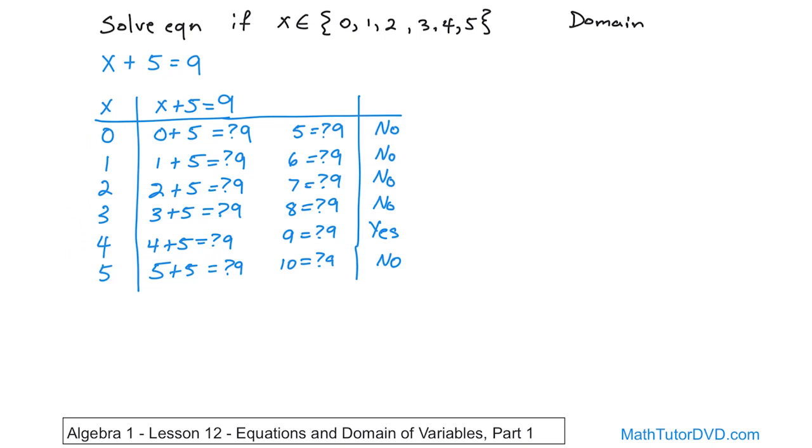So it looks like what we did is we took every possible value of x in its domain. In other words, every possible value of x that it could represent. And we calculated what would happen if we put it in there. And we were looking to see if it's equal to 9 because that's what the equation is. So no, no, no, no, yes, no. So the only value of x that works is x is equal to 4. So you can write that as x is equal to 4. But since we're talking about domains, another way you can write it is you can say x is equal to the set of numbers only containing the number 4. You can write it either way.